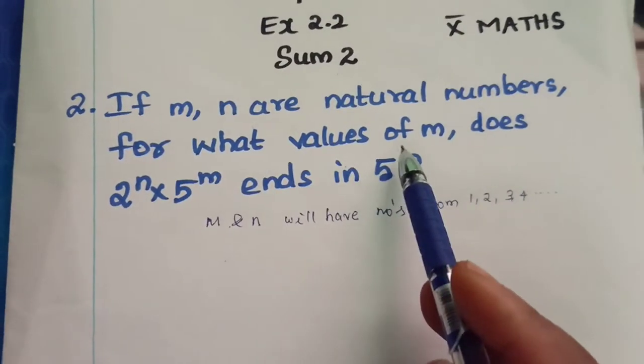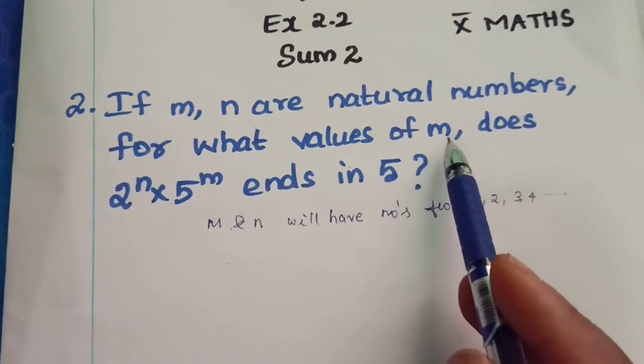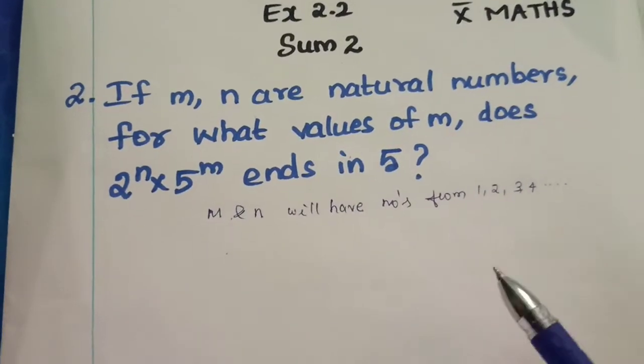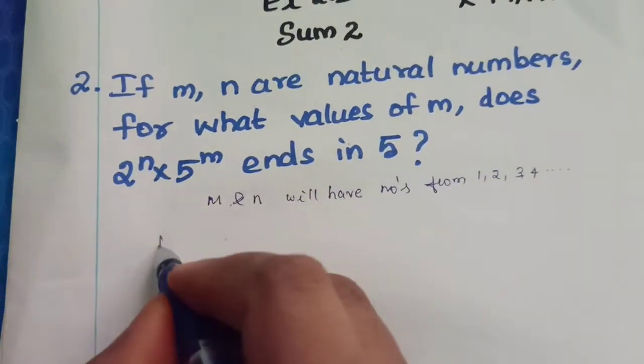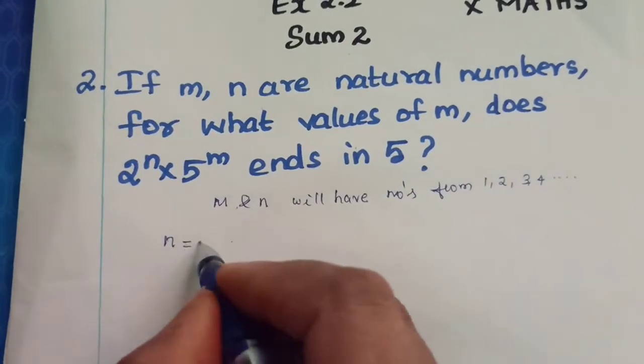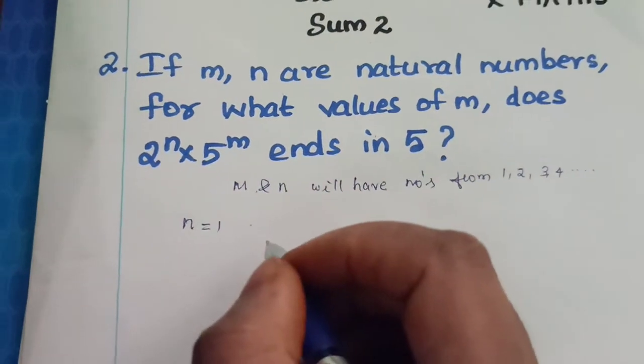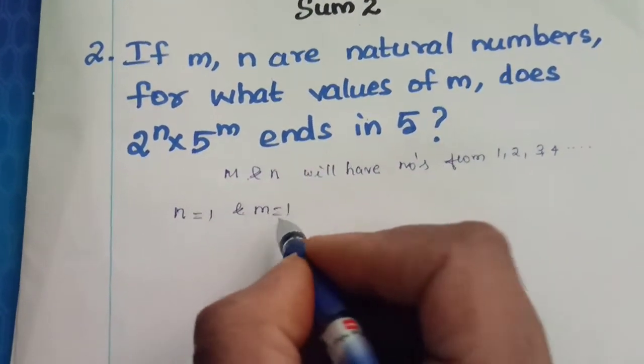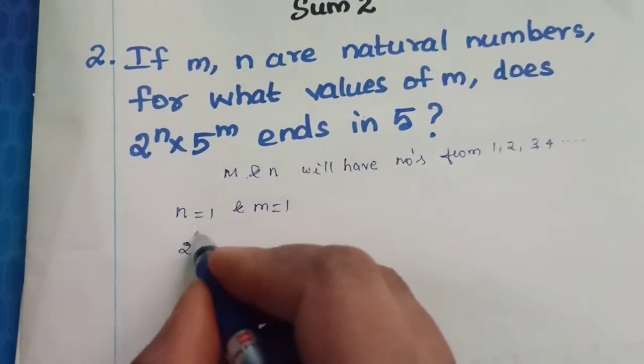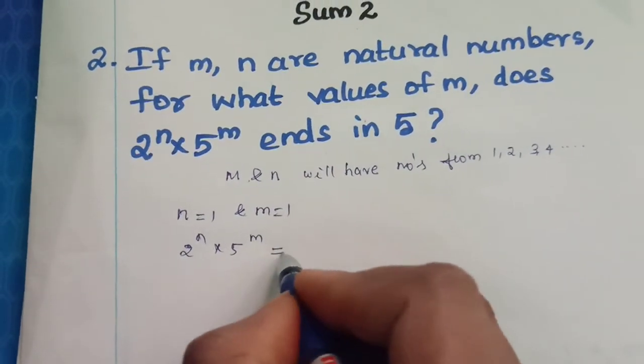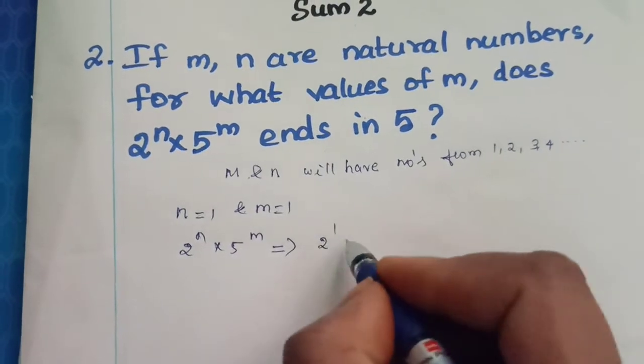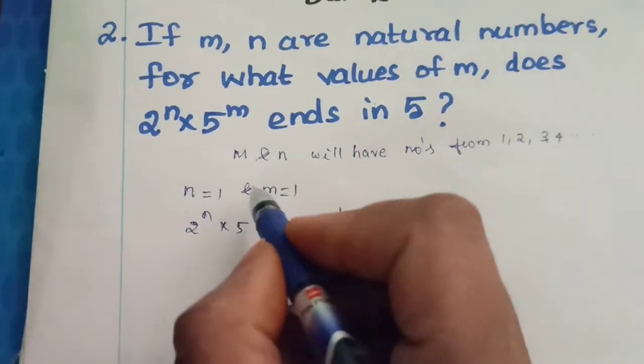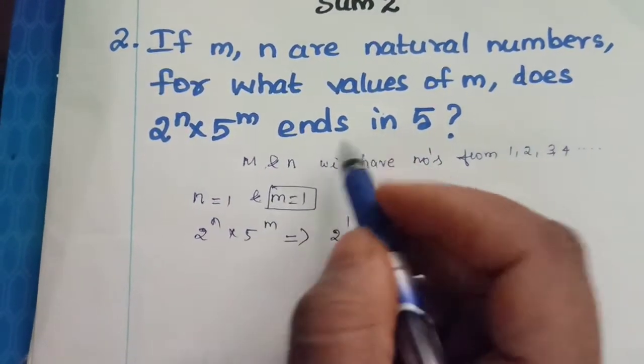So for what values of m they have asked. For what values of m does 2 power n into 5 power m end in 5? Okay, so we start putting n is equal to 1. They are asking only m values, okay? So n is equal to 1 and m is equal to 1. What will happen? So 2 power n into 5 power m becomes 2 power 1 into 5 power 1. So 2 times 5 is 10.